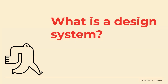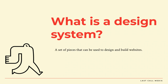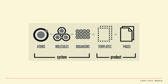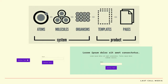So what is a design system? It's a set of pieces that could be used to design and build websites. It's usually made up of styles like colors and typefaces, and components like buttons and cards. Often atomic design is used to organize them — a concept of making bigger things out of smaller things, just like in the natural world. So you can see here this button is an atom, used to make a molecule — an email input box — and then the organism would be a newsletter signup component. A template might appear at the end of every blog page, and a single page would be like your homepage.